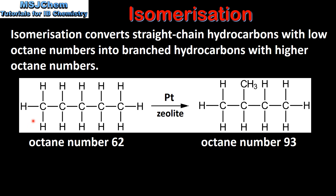In this example we start with a straight-chain hydrocarbon with five carbon atoms, which is pentane. In the presence of a platinum and zeolite catalyst, the branched isomer is formed, which is 2-methylbutane.